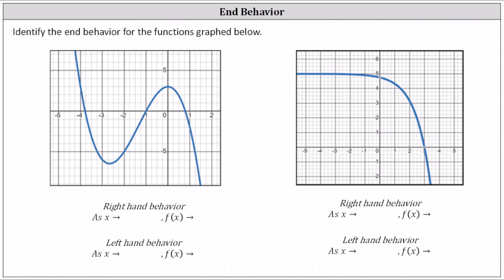In this lesson, we'll look at four examples of determining the end behavior of a function from the graph of a function. There are two types of end behavior for a function. Right-hand end behavior describes what y value or function value the graph is approaching as x increases without bound or approaches positive infinity.